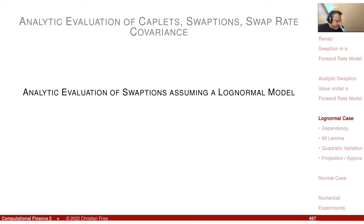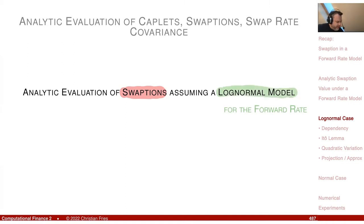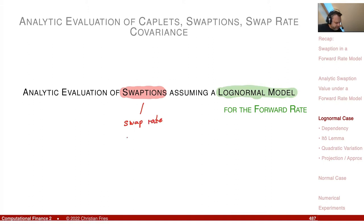Let's exercise this for a swaption. We'd like to derive an analytic valuation formula for swaptions assuming a log-normal model. You might say: I already have this — the Black model for the swaption with a log-normal swap rate. But the issue is we assume a log-normal model for the forward rate. The swaption is a non-linear function of the forward rate, and even if it were linear, the sum of log-normals is not log-normal. So it's not clear what the distribution of the swap rate is, and we don't have an analytic formula directly.